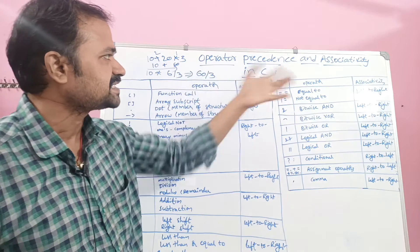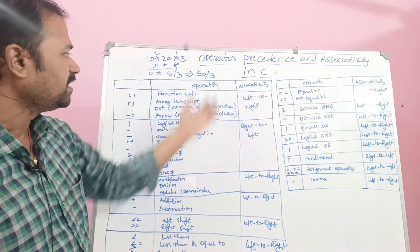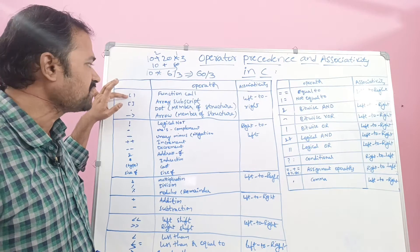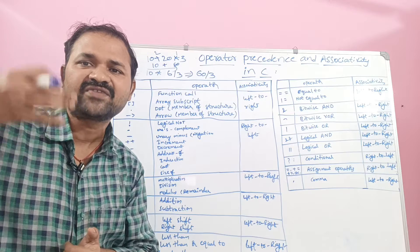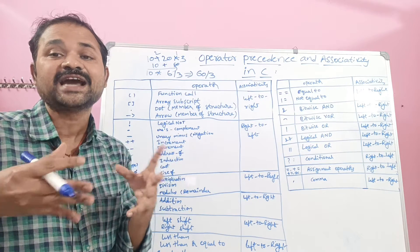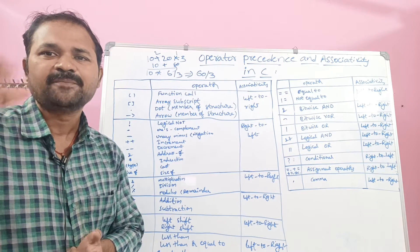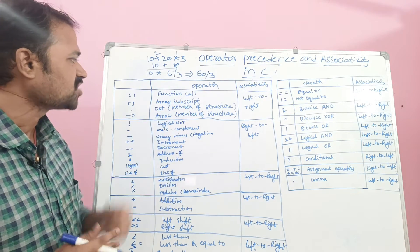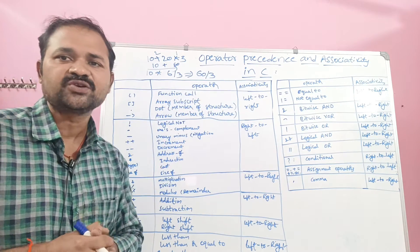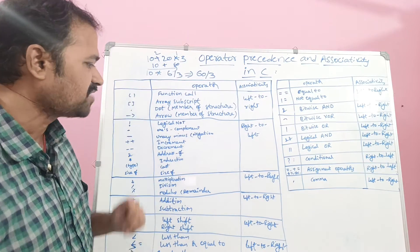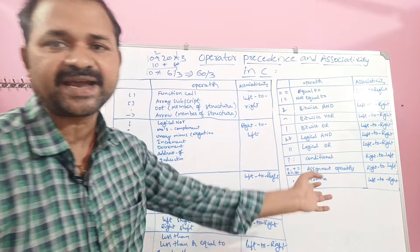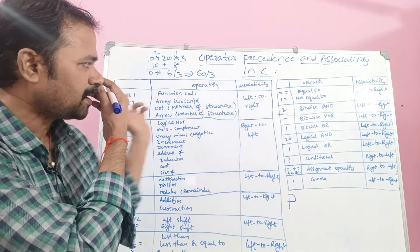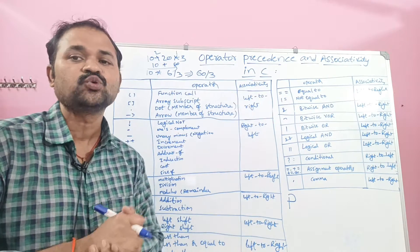Now let us see the precedence and associativity table. Here we have operators, the name of the operator, and associativity. The first symbol is parenthesis, which can also be called as function call. Parenthesis has the highest priority than any other operator in any programming language. Next is array subscript — square bracket. Then dot and arrow operators, which are useful to access members of a structure. The associativity for all these operators is from left to right.